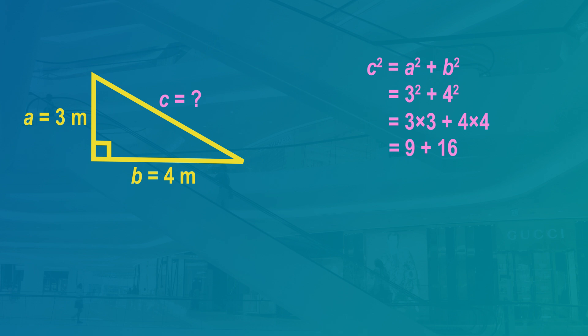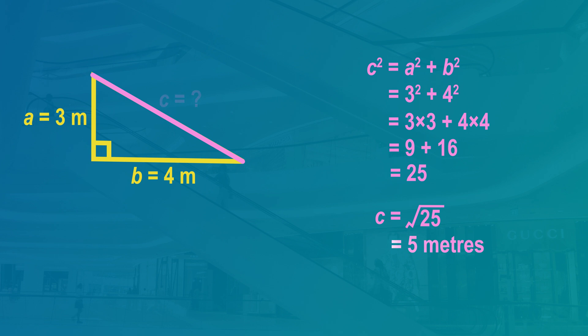So when we add them, 9 plus 16 is 25. So C squared equals 25. But we want to find the length of C, not C squared, so there is one more step. We square root 25 to find C. So C equals 5. The length of the hypotenuse, or the escalator, is 5 meters.